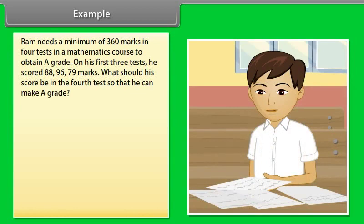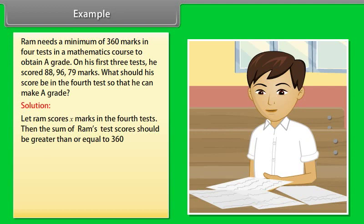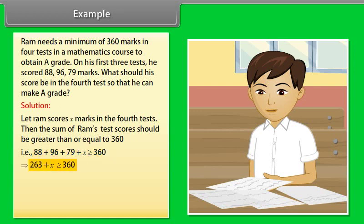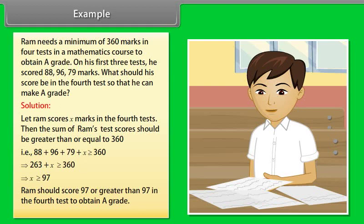Example: Ram needs a minimum of 360 marks in 4 tests in a mathematics course to obtain an A grade. On his first 3 tests, he scored 88, 96, and 79 marks. What should his score be in the 4th test to make A grade? Let Ram score x marks in the 4th test. Then 88 + 96 + 79 + x ≥ 360, which implies 263 + x ≥ 360, so x ≥ 97. Ram should score 97 or greater in the 4th test to obtain A grade.